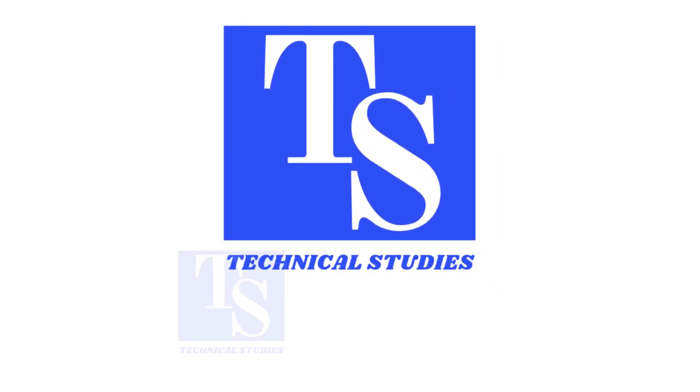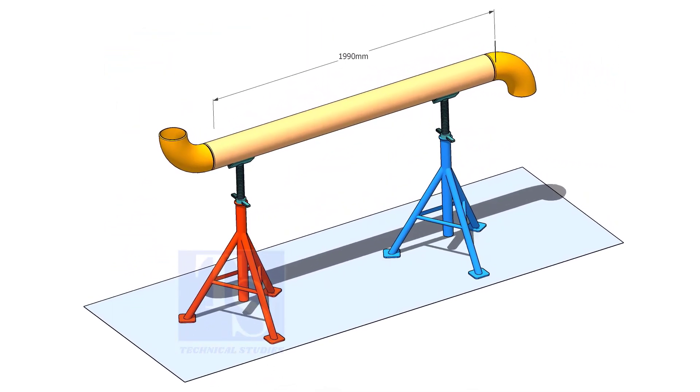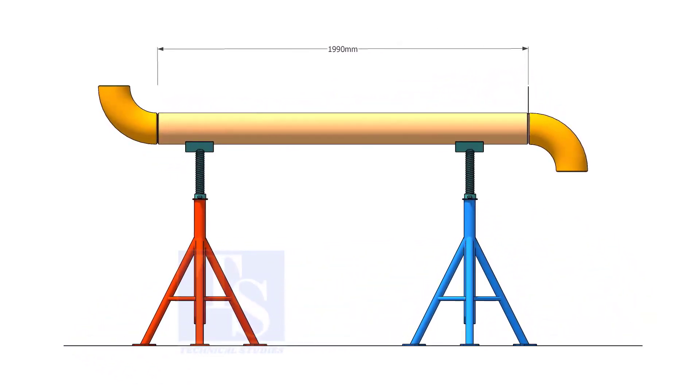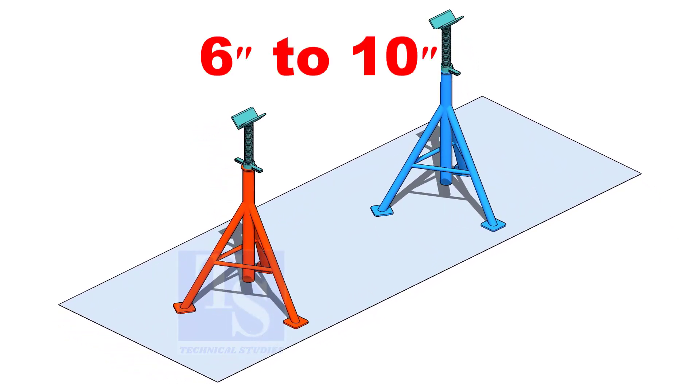Welcome to Technical Studies. In this video, I will show you three methods of pipe marking. Assume you want to mark a piece of pipe for a spool. For pipe sizes between 6 inches and 10 inches, this method is good.